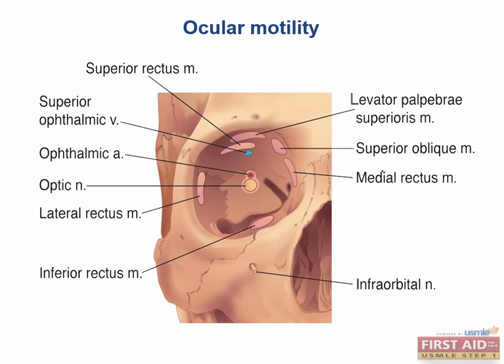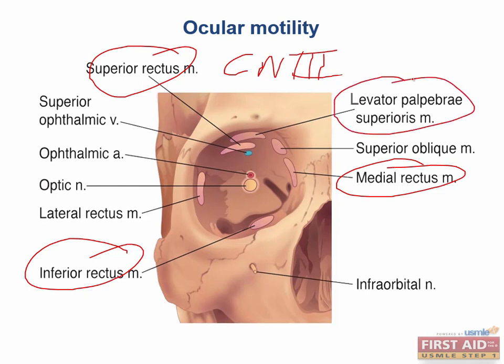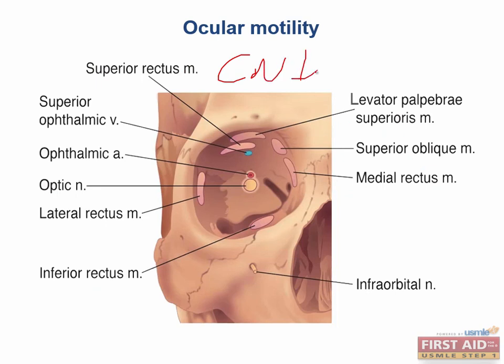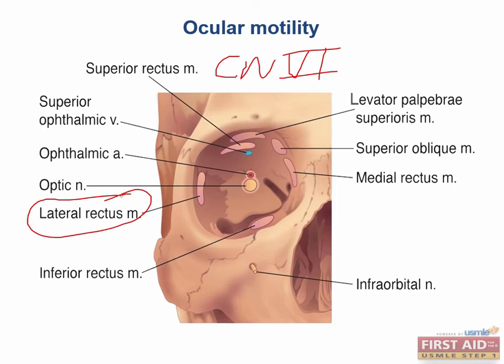There are six muscles that move the eye and three cranial nerves that innervate those muscles. Cranial nerve 3 innervates four of the six muscles: the superior, inferior, and medial recti muscles, as well as the inferior oblique. Cranial nerve 3 also controls pupillary constriction as well as the levator palpebrae muscle. Cranial nerve 4 only innervates the superior oblique muscle, while cranial nerve 6 innervates the lateral rectus.